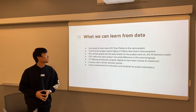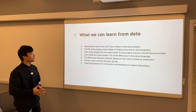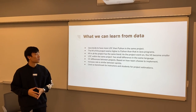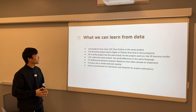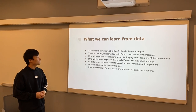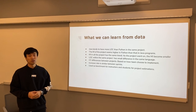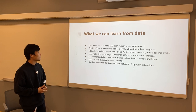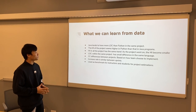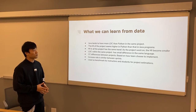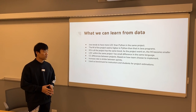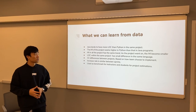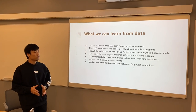First, Java tends to have more LOC than Python in the same project, and the MI of the project seems higher in Python than in Java programs. This is because Java is a strong type language and it needs to write functions like getter and setter in the classes. Second, the MI in all the projects has the same trend: as the project goes on, the MI becomes smaller, because as the code gets more and more, the maintenance difficulty gets harder and harder.